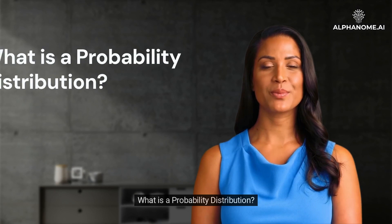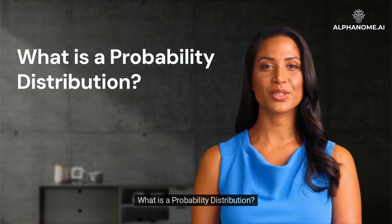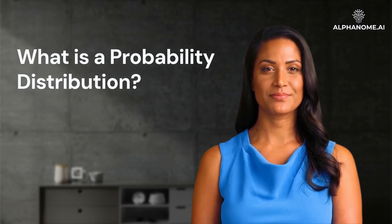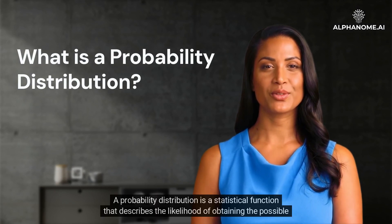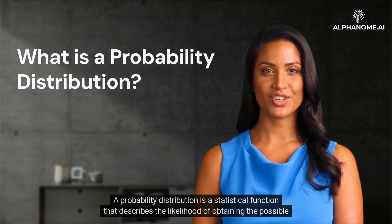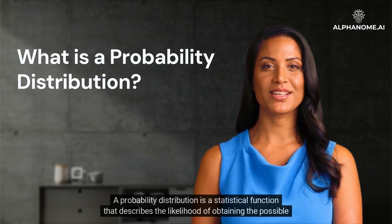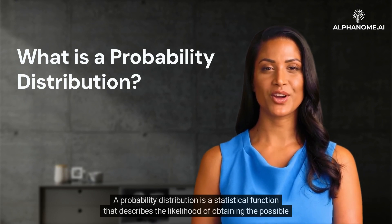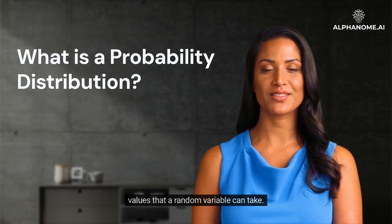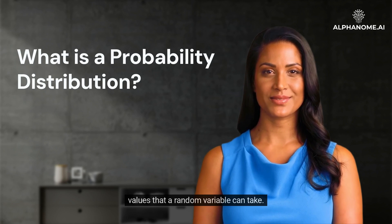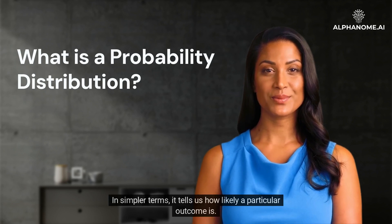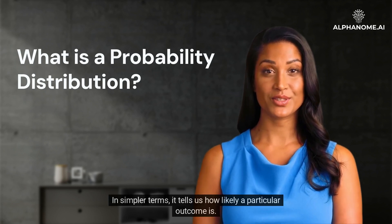What is a probability distribution? A probability distribution is a statistical function that describes the likelihood of obtaining the possible values that a random variable can take. In simpler terms, it tells us how likely a particular outcome is.